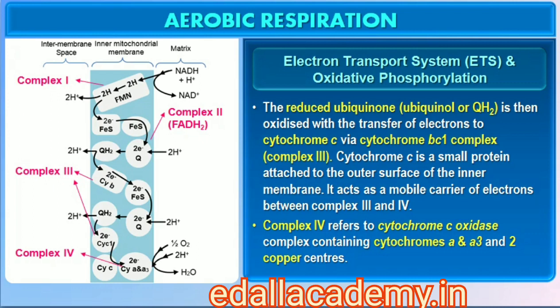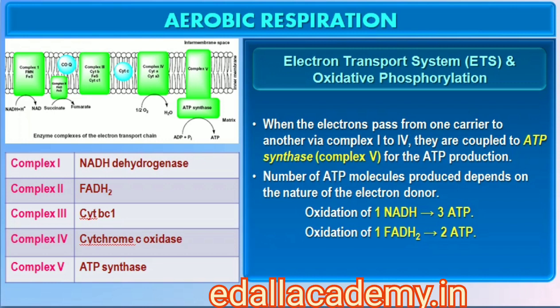The reduced ubiquinone (ubiquinol) is then oxidized with the transfer of electrons to cytochrome C via the cytochrome BC1 complex (complex III). Cytochrome C is a small protein attached to the outer surface of the inner membrane and acts as a mobile carrier for transfer of electrons between complex III and IV. Complex IV refers to the cytochrome C oxidase complex containing cytochromes a and a3 and two copper centers. When electrons pass from one carrier to another via complex IV in the electron transport chain, they are coupled to ATP synthase (complex V) for the production of ATP from ADP and inorganic phosphate.